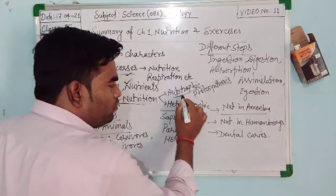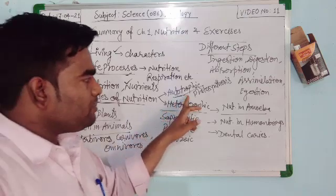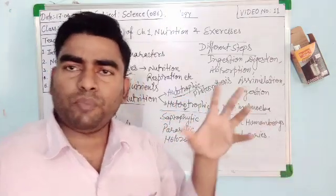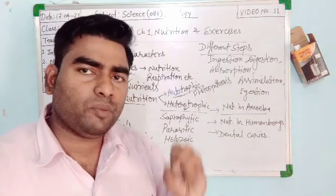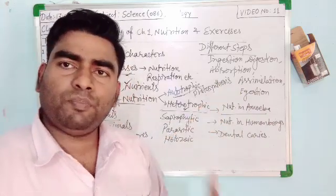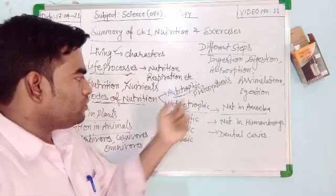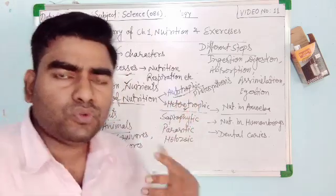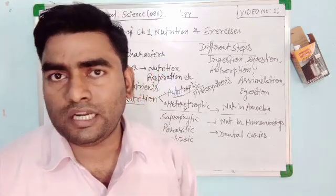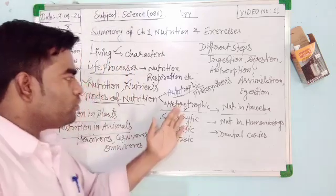Then we discussed modes of nutrition. There are two types: autotrophic and heterotrophic. Autotrophic mode of nutrition means photosynthesis — organisms that can prepare their own food are called autotrophs. Green plants prepare their own food through photosynthesis, so they are autotrophs. Heterotrophs are organisms that cannot prepare their own food and depend on others for ready-made food.